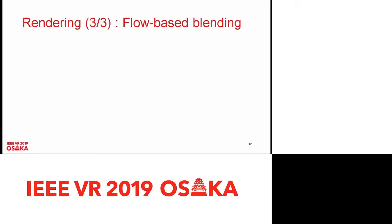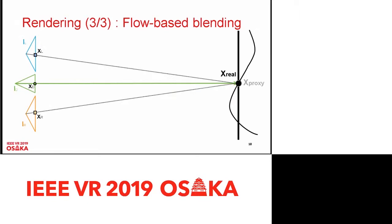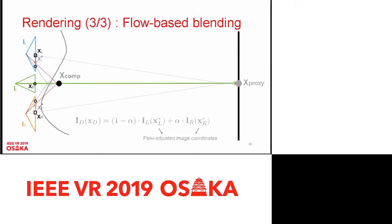Since our method is implicit, we use flow-based blending. If the scene geometry is well approximated by the proxy, there's not much to do. But in the real world, you have closer objects, and the point projected from the actual real object projects into different places in the images. We perform flow adjustment to push these initially proxy-projected points XL and XR towards the correct new positions. We call these flow-compensated image coordinates. For more detail on how this works, please have a look at our paper.